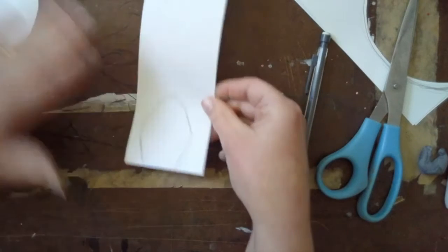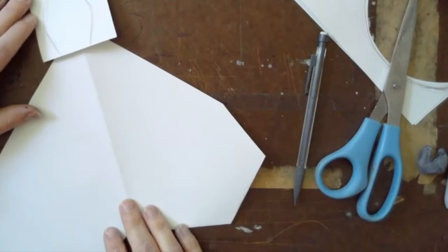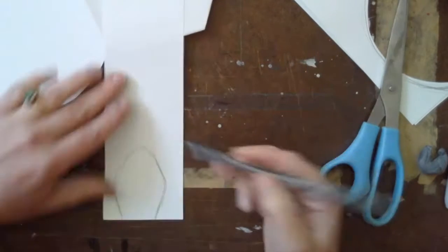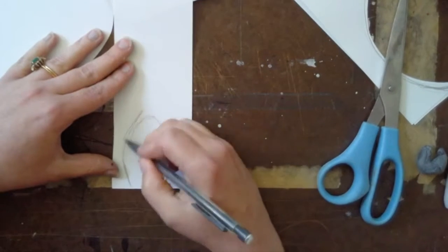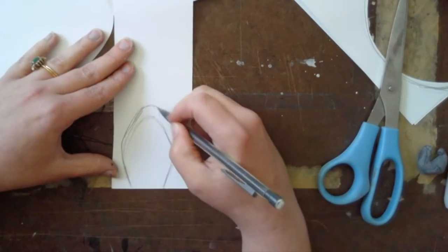Once you have your ear and your horn drawn out, go ahead and cut those out and glue it to your unicorn. You'll see the ear kind of goes right at that point, and then the horn will be a little bit in front of that. You'll see mine are a little bit out of order because I'll have my face in the next one, but don't worry about that. I'll show you that step in a minute.